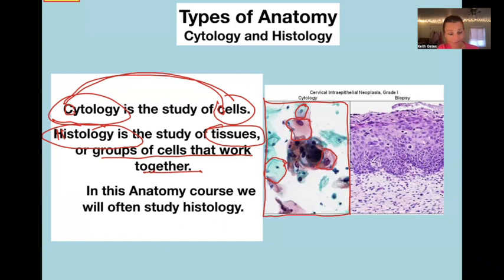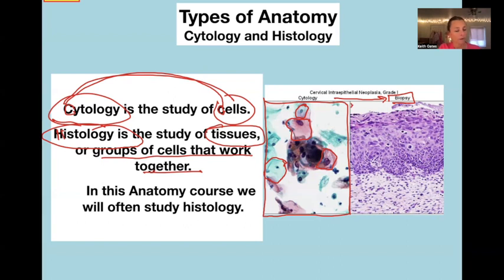In this picture they found some abnormal-looking cells, so they had the person come back in and took a tiny little chunk of tissue — called a biopsy — from her cervix. That little chunk of tissue is sliced very, very thinly so that light will go through it, and it's made into a histology, or tissue, slide. The cells are really small in this picture because we're looking at a whole little chunk of tissue.